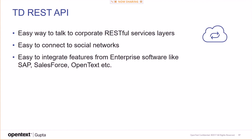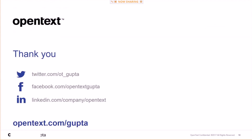The HTTP REST API is an easy way to talk to corporate RESTful service layers. You can easily connect to social networks — Facebook and others all provide JSON/RESTful interfaces — and integrate your software with systems like SAP, Salesforce, and OpenText Enterprise software or document management. That was the REST overview for Team Developer.